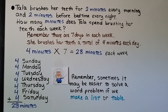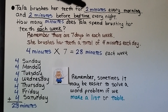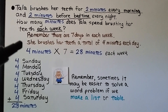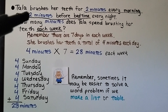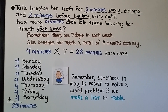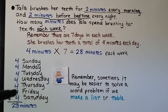Problem: Tala brushes her teeth for 2 minutes every morning and 2 minutes before bedtime every night. How many minutes does she spend brushing her teeth each week? Remember, there are 7 days in a week. She brushes a total of 4 minutes each day — 2 minutes in the morning and 2 before bed. So we do 4 minutes times 7 days: 4 times 7 equals 28. Tala spends 28 minutes each week brushing her teeth. We can also write out all 7 days and list 4 minutes for each, then add them up to get 28.